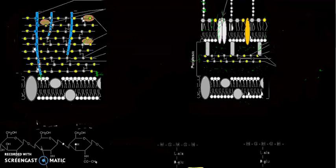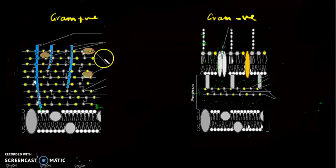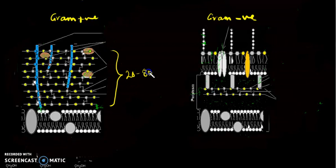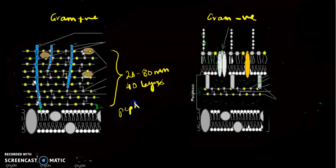The basic principle of this gram staining is mainly based on the nature of the cell wall of these two bacteria. The gram positive bacteria have a very thick peptidoglycan layer that is about 20 to 80 nanometers thick in different bacteria, and they comprise about 40 layers of peptidoglycan chains that are cross-linked with tetrapeptide side chains via peptide linkages, making a very rigid cell wall. These are made of peptidoglycan, also called murein.